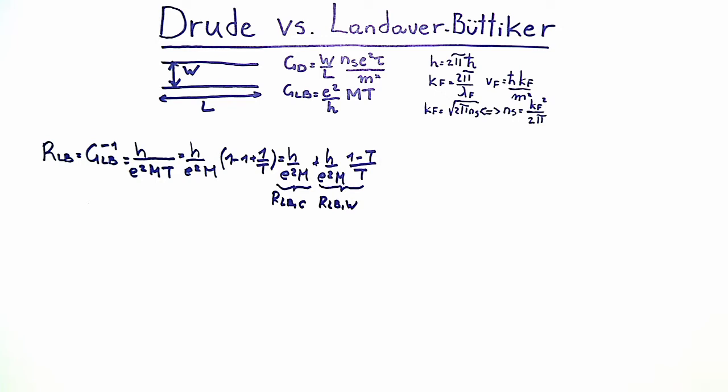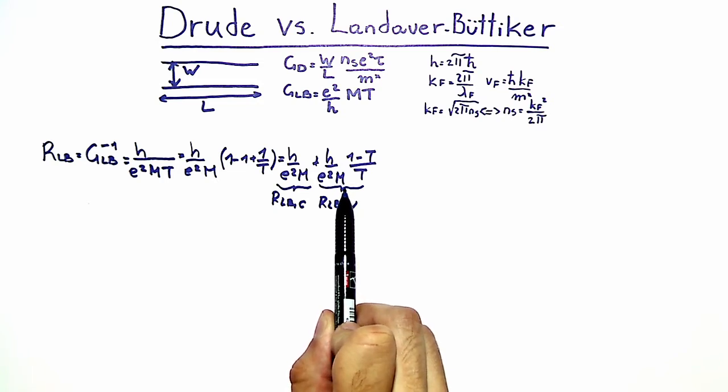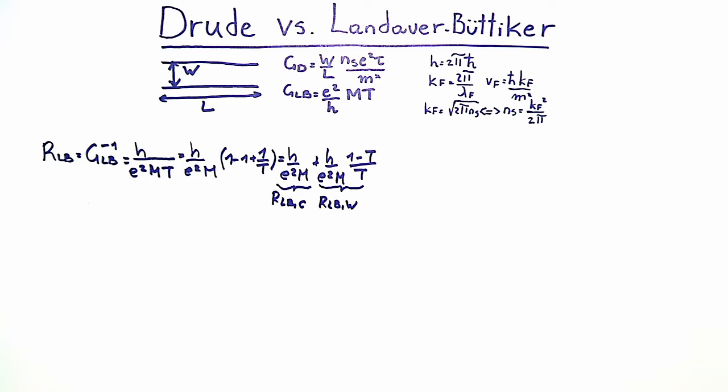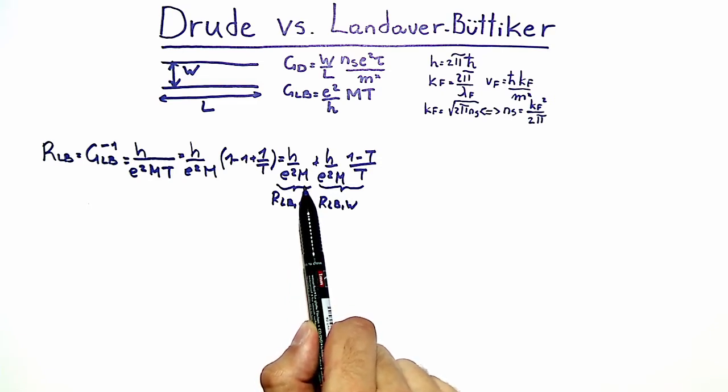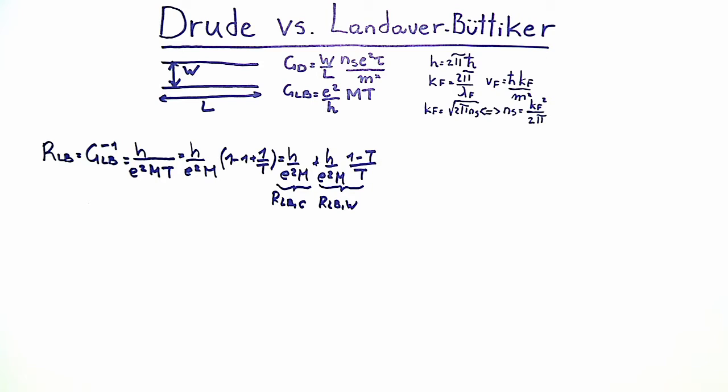The wire resistance depends on the transmission T. When T goes to 1, as in an ideal wire, this term goes to zero — intuitively clear. When T goes to zero, this term diverges. The contact resistance, the first term, does not depend on T but only on the number of modes M. It is non-zero even for a perfect wire, since it arises due to inelastic relaxation in the contacts.